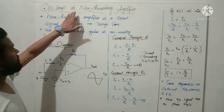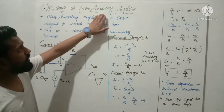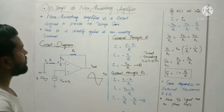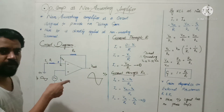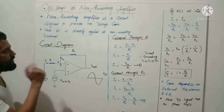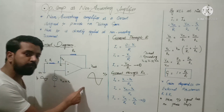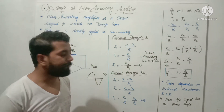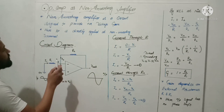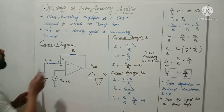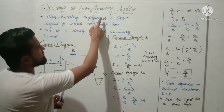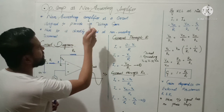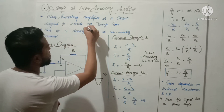Operational amplifier as a non-inverting amplifier. First of all, we will see why we use it and what is our input and output relation. A non-inverting amplifier is a circuit designed to provide positive voltage gain.